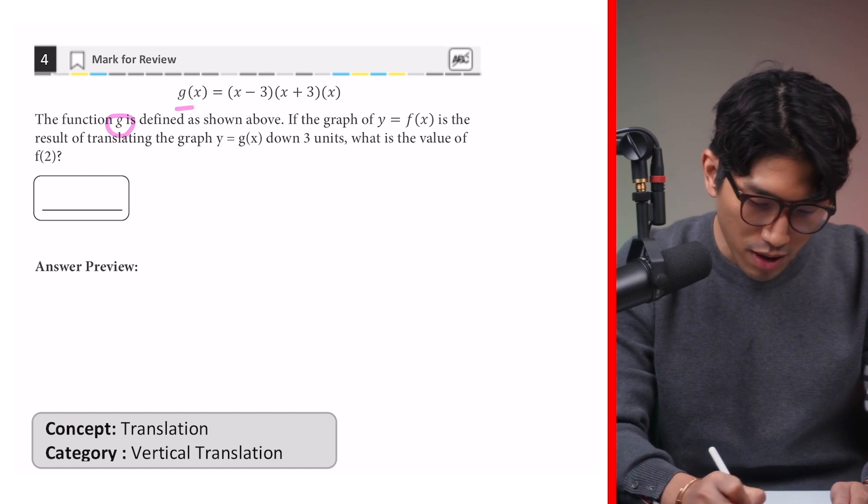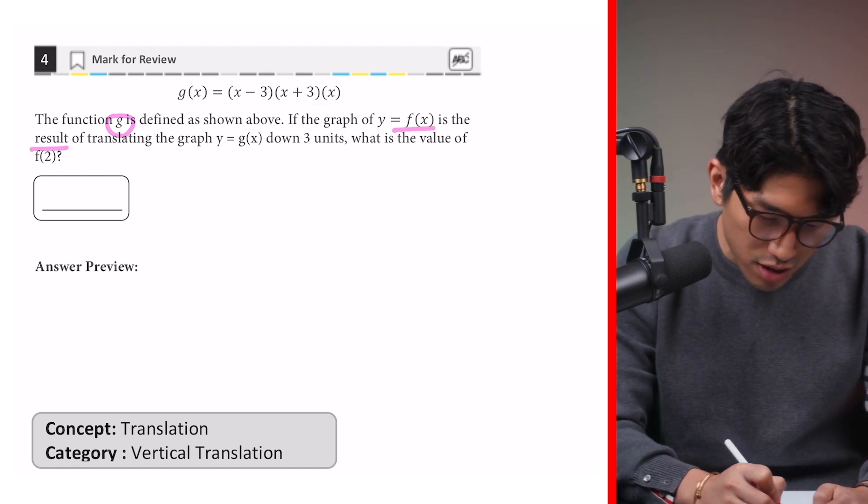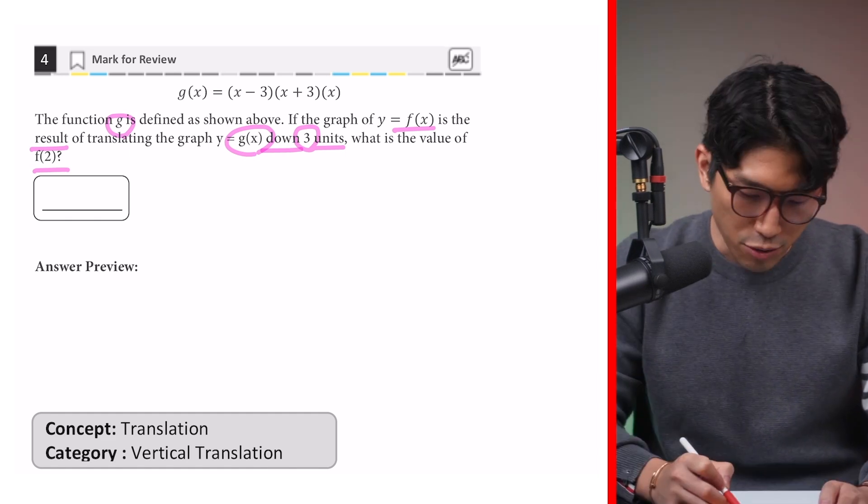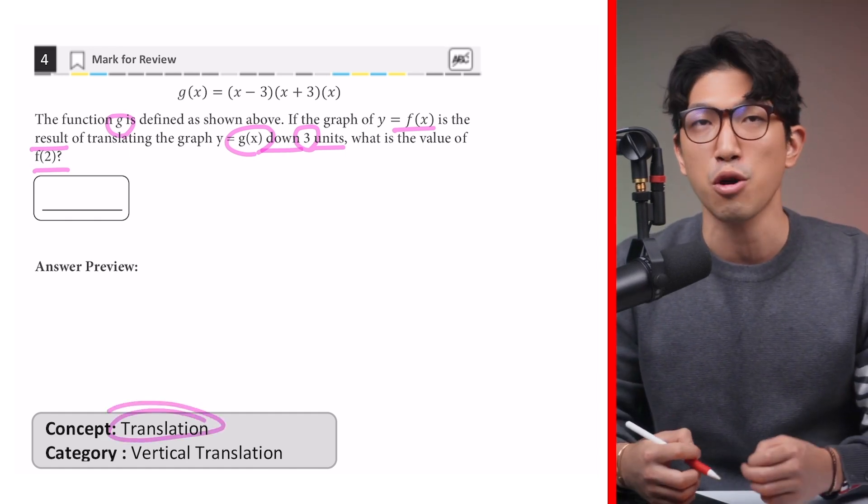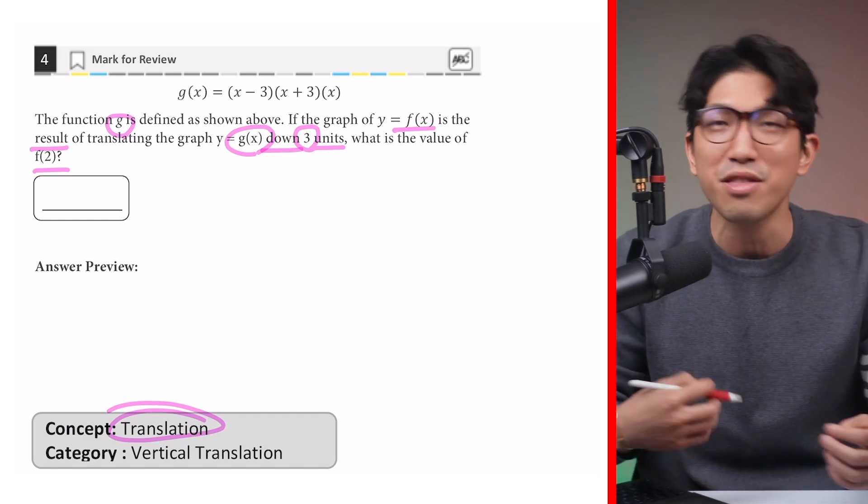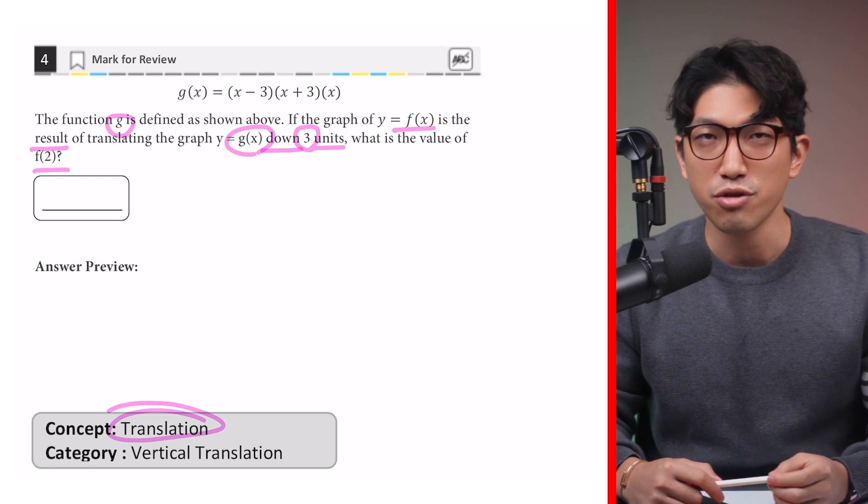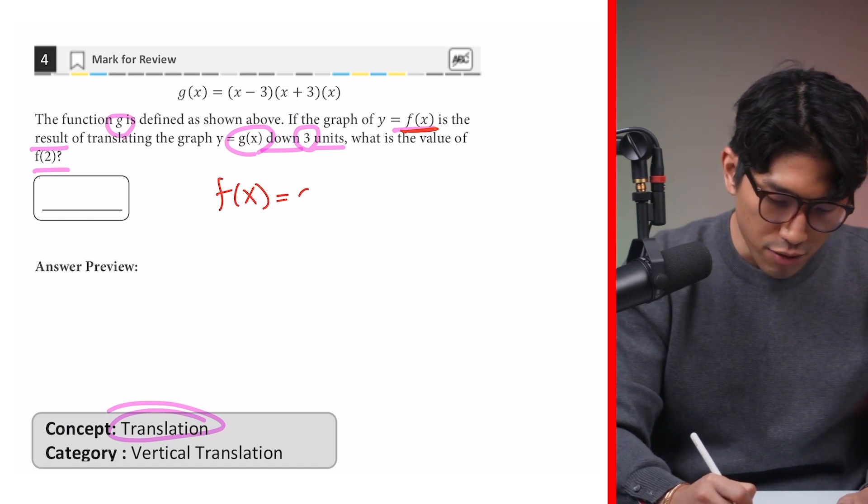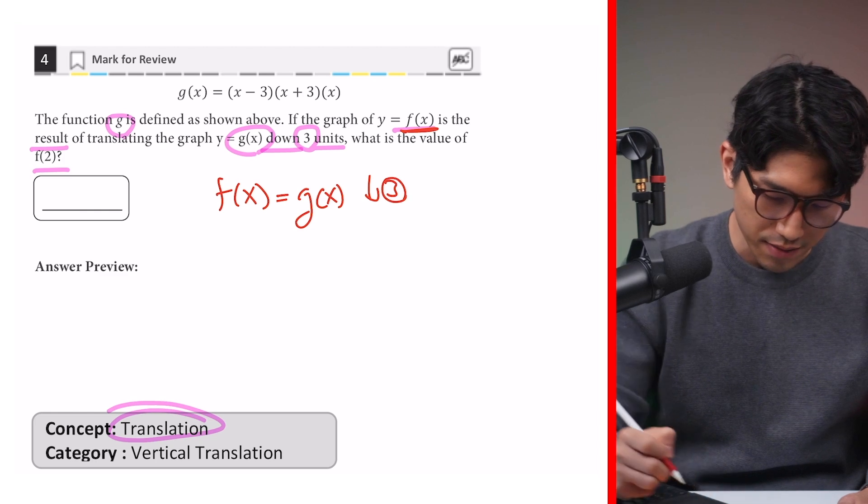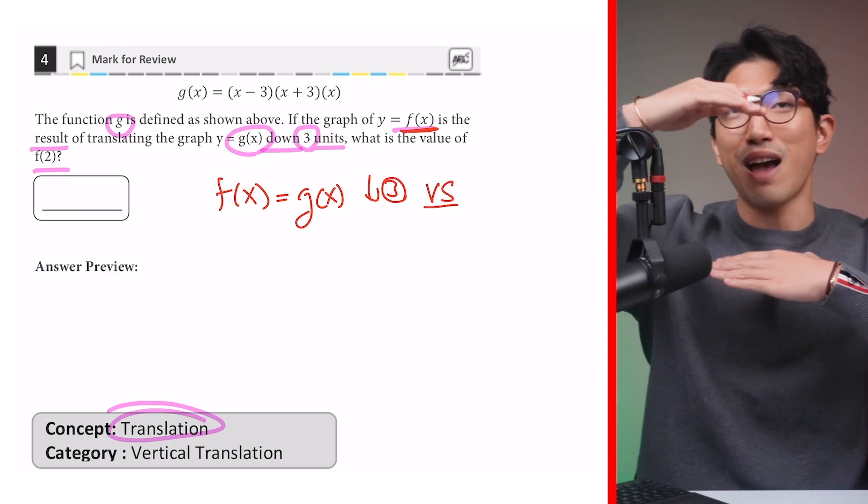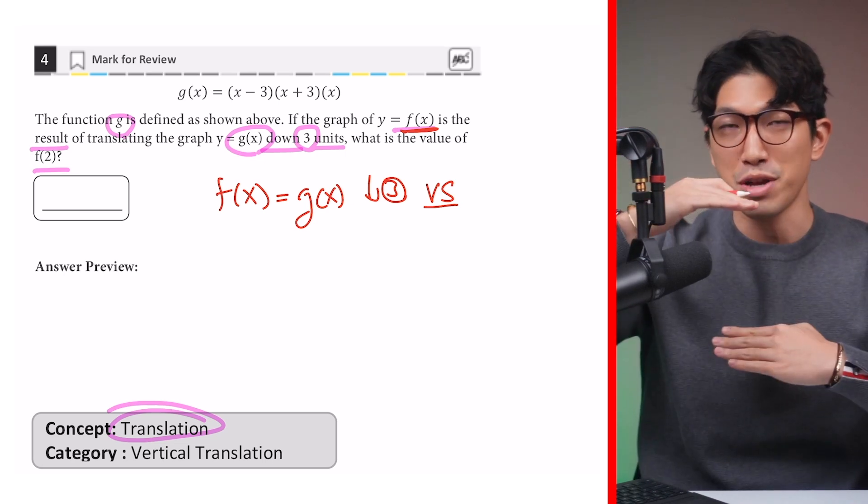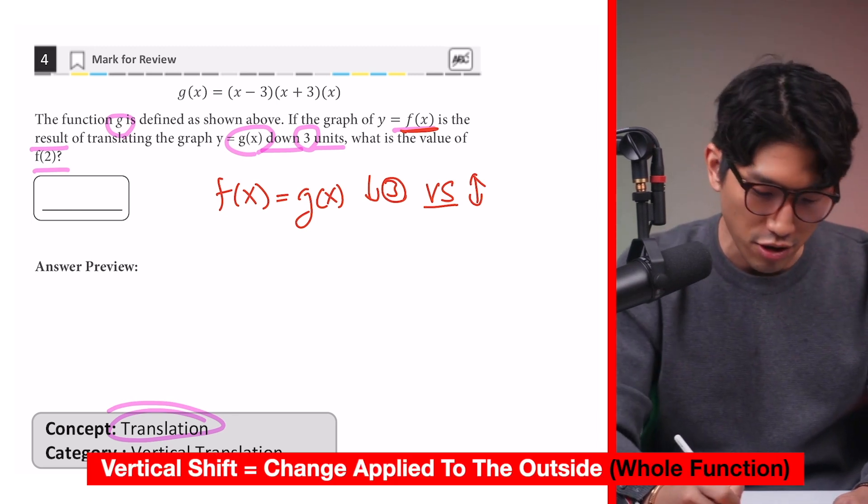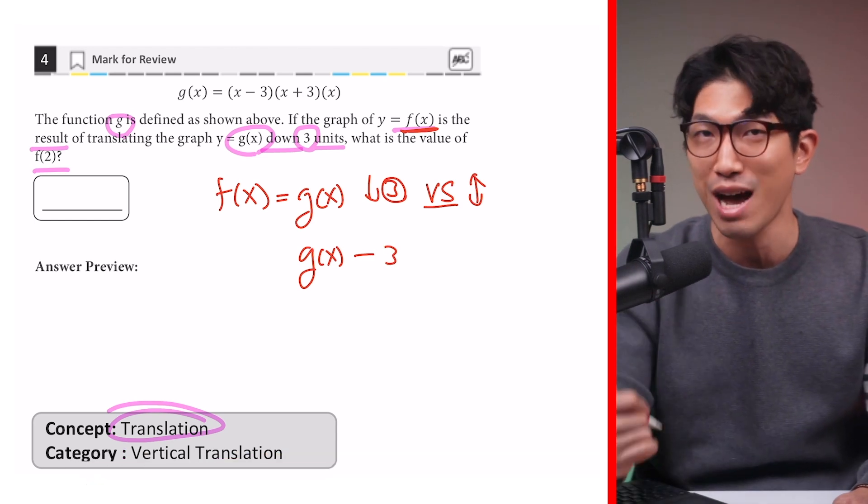The function g is defined as shown above right here. If the graph of f of x is the result of translating the graph of g of x down 3 units, what's the value of f of 2? So this question is testing you on what's known as translation, and translation was something that was tested a couple times here and there, very rarely on the paper SAT. But for the digital SAT, it's showing up so frequently, and you just need to know how to do two things. So we know that f of x is a result of moving g of x down 3 units. And this is known as the vertical shift because we're moving the graph up or down. In this case, we're moving it down 3 units. So that's a vertical shift. And if that's the case, we simply apply the change to the outside of the function.